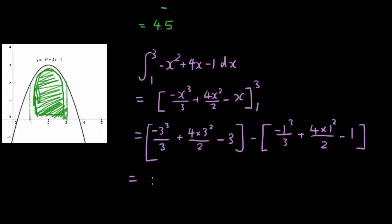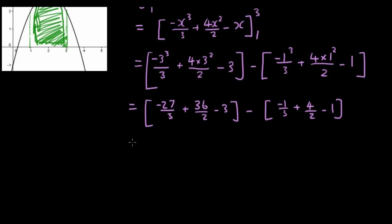So now let's try to do it by hand first instead of typing it all in the calculator. So we have negative 27 over 3 plus 36 over 2 minus 3 minus negative 1 over 3 plus 4 over 2 minus 1. So this is all now just year 5 math I guess. So we have negative 9 plus 18 minus 3, just going to type it in the calculator now.